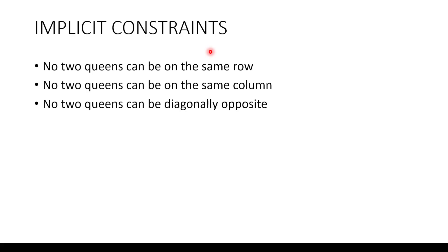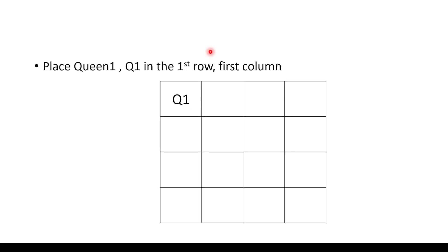With these explicit and implicit constraints, let's move forward. First, let us place Q1 in the first row. Since there are no other queens to check against for same column, same row, or same diagonal violations, we retain this position for Q1.